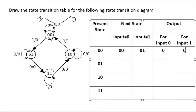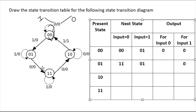Now the present state is zero-one. When the input is one, it is again going to zero-one — no transition is taking place for input one. So zero-one has no transition when input is one, and the output is zero. Now zero-one is going to one-one state when input is zero, and the output is also zero.